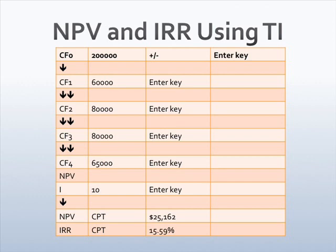Input $65,000 and press enter. Press the NPV key — you will see I on the calculator screen. Input 10 for the interest rate and press enter. Press down arrow once; you will see NPV on the screen. Press CPT and NPV — an NPV of $25,162 will be displayed. Press IRR and then CPT — an IRR of 15.5% will be displayed on the calculator screen.